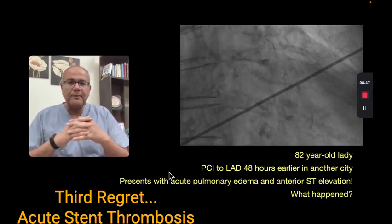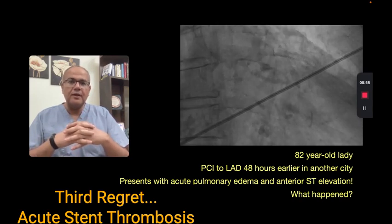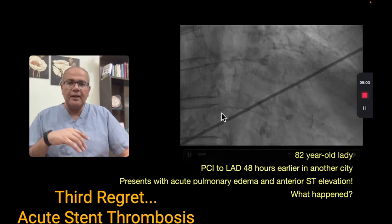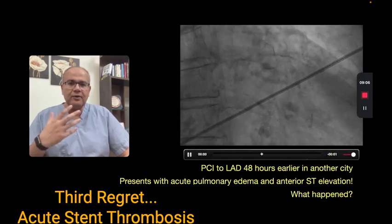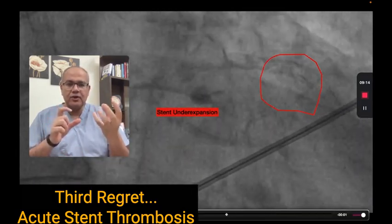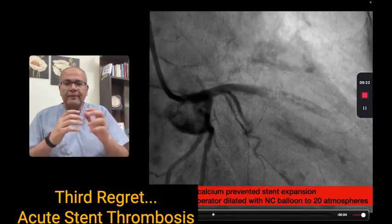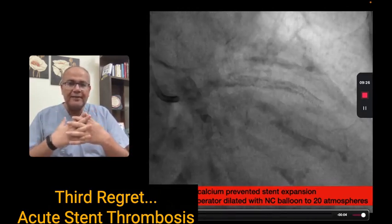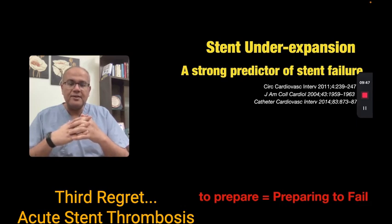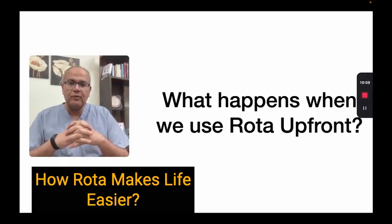Another even worse situation was a patient we received from another facility — she had an angioplasty 48 hours prior, then presented with acute ST-elevation myocardial infarction and pulmonary edema. She was shocked so we had to insert an intra-aortic balloon pump. We could see fluoroscopically visible calcium. Looking at the fluoroscopy, the stent was underexpanded because chunks of calcium had apparently not been modified. Going back to the report, the previous operator did no debulking — he relied only on balloon inflation then deployed the stent. The stent was underexpanded and this resulted in acute stent thrombosis.